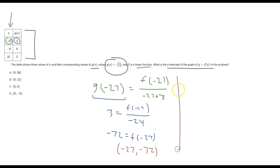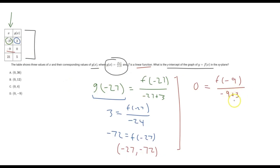So this entire process we just have to replicate again with any one of these points. I'm going to use negative 9, 0 here. So we know g of negative 9 is going to be 0. I'm just going to skip the top step and write 0 equals f of x, where x is negative 9. So f of negative 9 over negative 9 plus 3 — and whatever we do here, that's negative 6 — but when we multiply 0 by negative 6, we still get 0. So 0 equals f of negative 9. That's our second coordinate point: negative 9 comma 0.